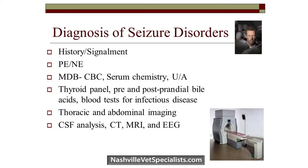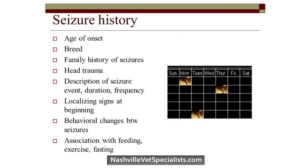Key history questions when a patient presents for seizures: How old is the patient? What breed? Is there any history of seizures or trauma? What does the event look like — is there video? Are there any localizing signs before the event? Are there behavioral changes between seizures — confusion, circling, bumping into things? Are seizures occurring at a specific time of day or associated with exercise? Seizures tend to occur at rest, so exercise-associated events should raise suspicion for a non-seizure diagnosis.